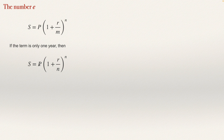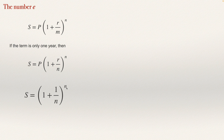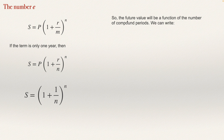We are going to analyze what happens if we deposit just $1 at a 100% interest rate, so when r equals 1. In this case, the formula will be just 1 plus 1 over n to the power n. We analyze what happens with $1 at 100% interest in one year if compounded n times per year. So the future value is a function of n: f(n) = (1 + 1/n)^n.